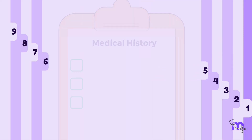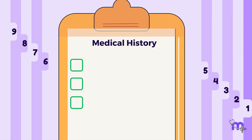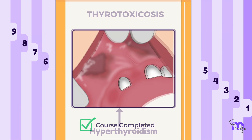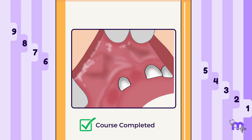If a patient's medical history reveals thyrotoxicosis, the pigmentation might be due to hyperthyroidism. This tends to resolve once treatment of the condition is completed.